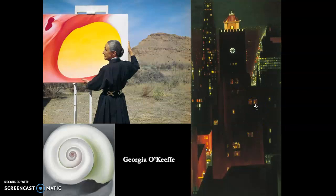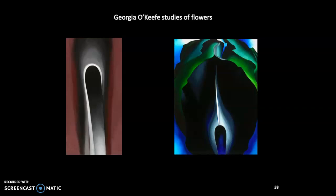O'Keeffe eventually moved out west, while still married but living separately from Stieglitz. He had affairs with women, and O'Keeffe also had affairs with women — she was famously bisexual, though she would not discuss it publicly. She also would not publicly confirm the symbolic meaning of her flower paintings. She takes a basic form and looks at its abstraction — the smooth beauty of a shell, for instance, focusing on its movement. Her Jack in the Pulpit series is among her most famous work: she starts on the outside of a flower and moves progressively inward, showing the smooth rendering of the flower's folds.